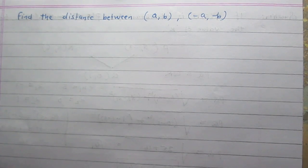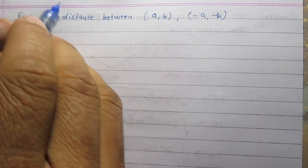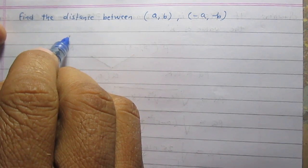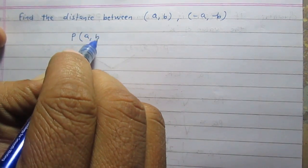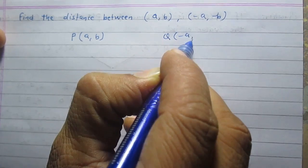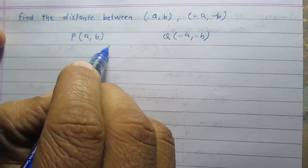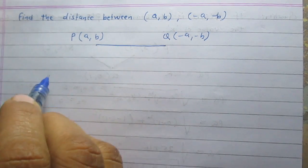Find the distance between the point with coordinates (a, b) and the point with coordinates (-a, -b). Let us assume the given points are point P with coordinates (a, b) and point Q with coordinates (-a, -b), and we are to find the distance between these two points.